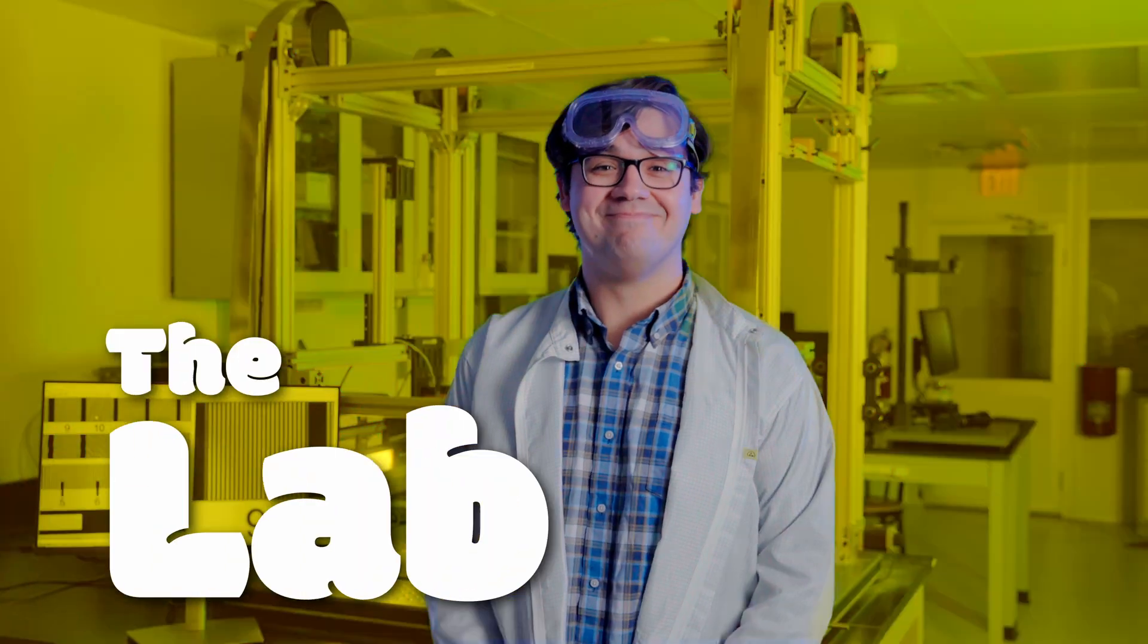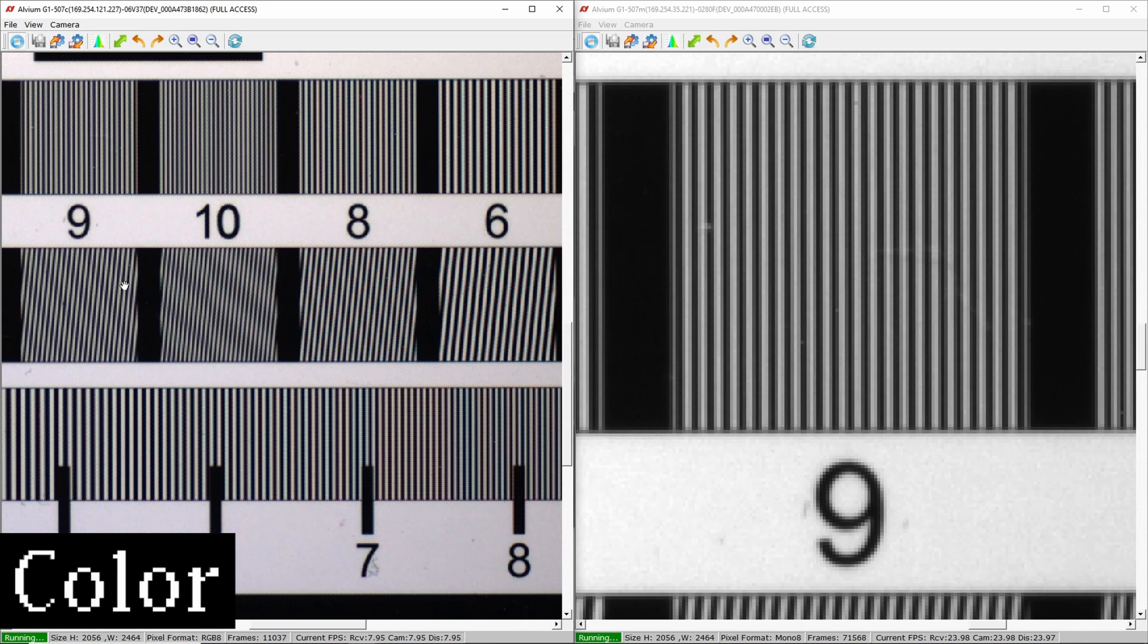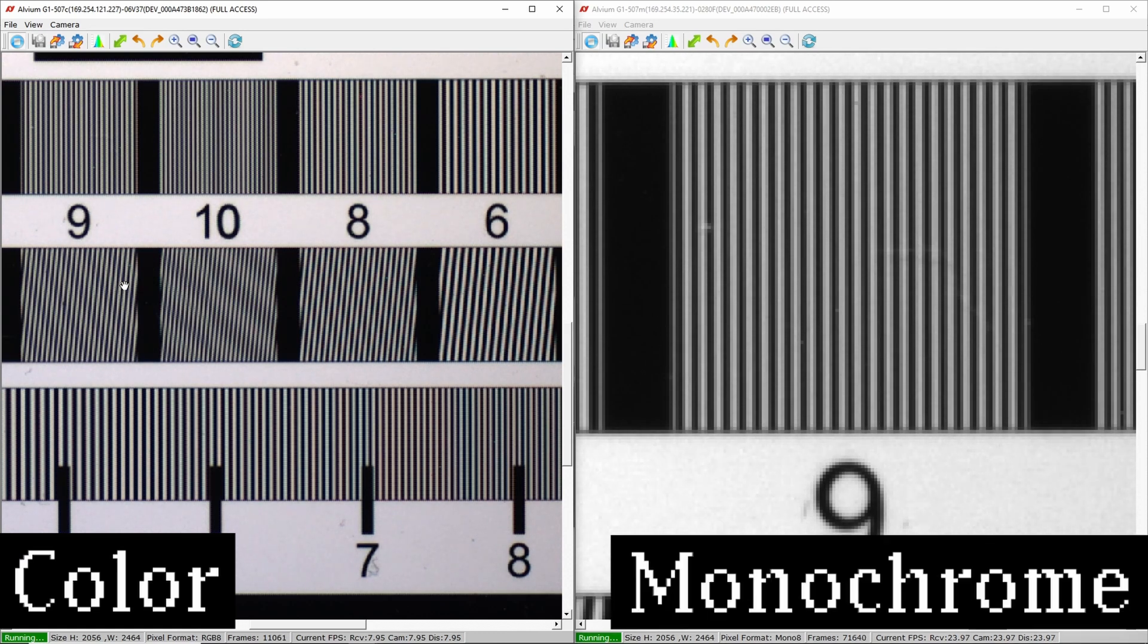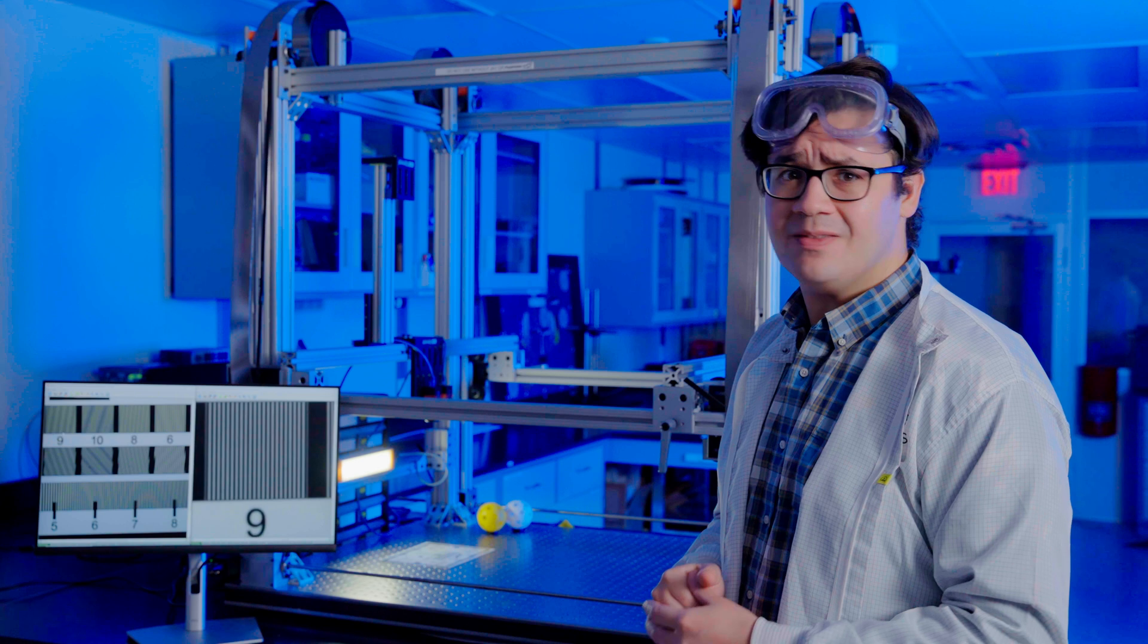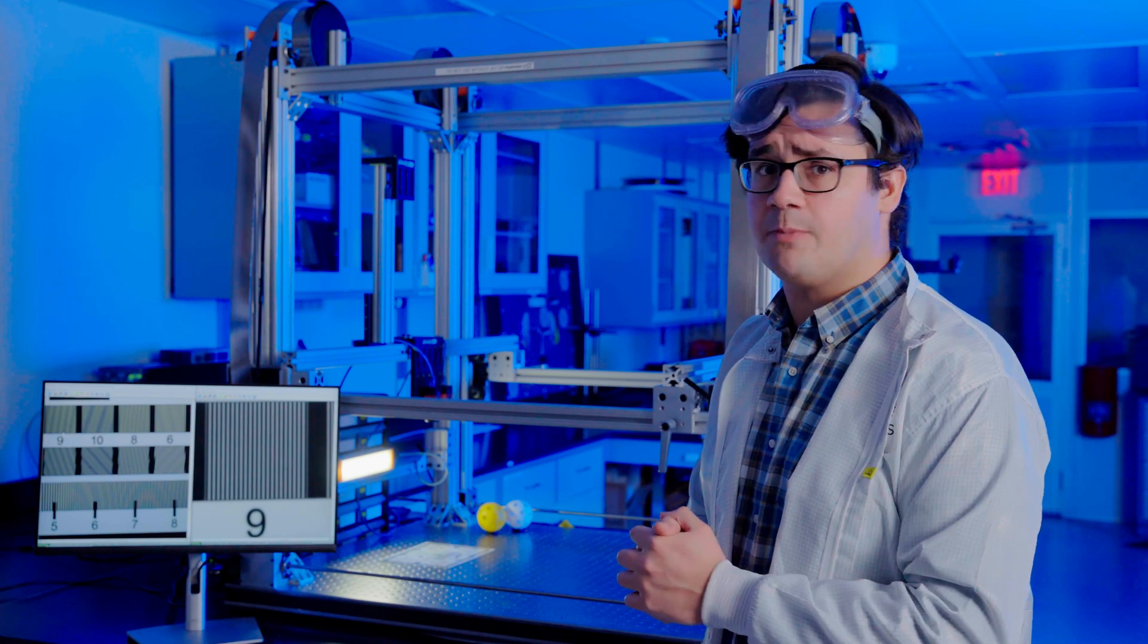Welcome to the lab! Here we have our two cameras. The left is color and the right is monochrome. On the monochrome image, the lines are clear and discernible. This means there's lots of contrast in our image, which is vital to applications such as barcode reading and OCR.